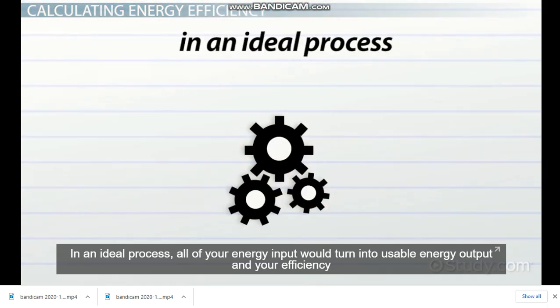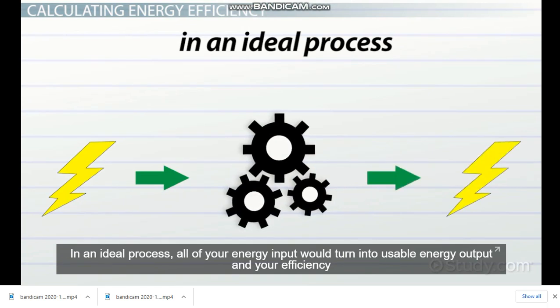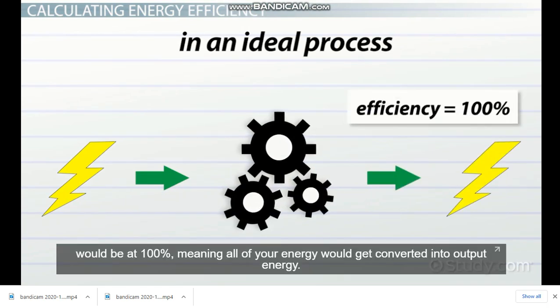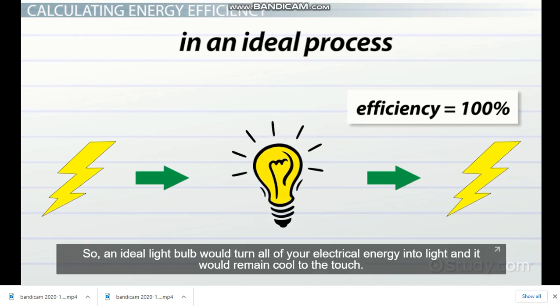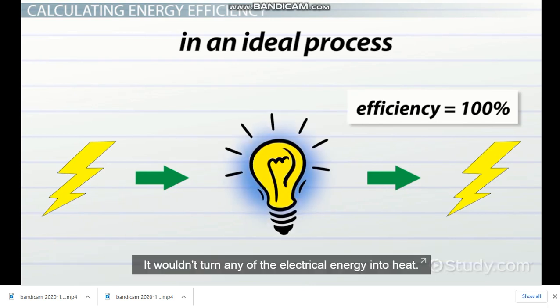In an ideal process, all of your energy input would turn into usable energy output, and your efficiency would be at 100%, meaning all of your energy would get converted into output energy. So, an ideal light bulb would turn all of your electrical energy into light, and it would remain cool to the touch. It wouldn't turn any of the electrical energy into heat.